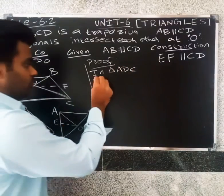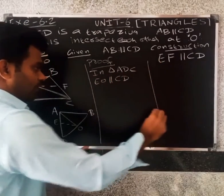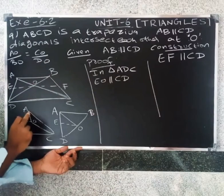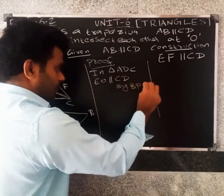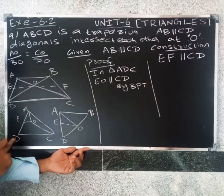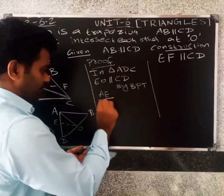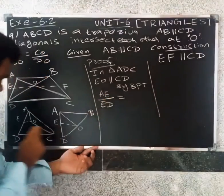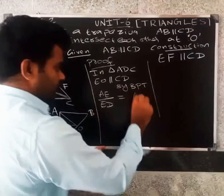EO parallel to CD. By Basic Proportionality Theorem, AE divided by ED equals AO divided by OC.